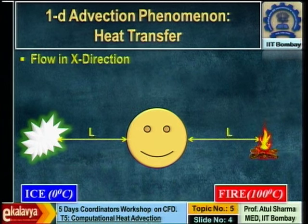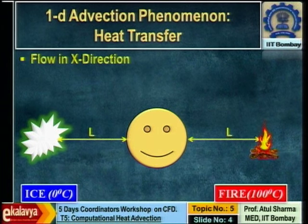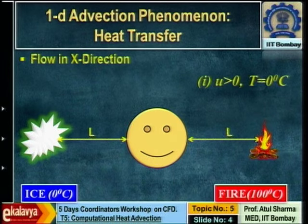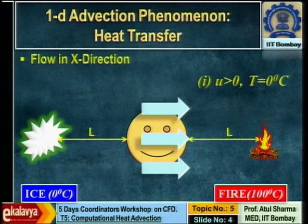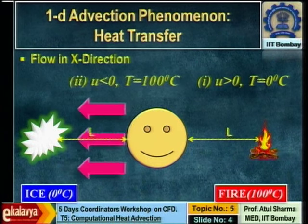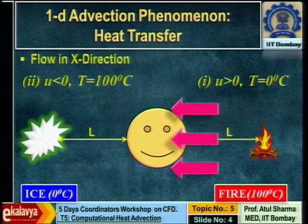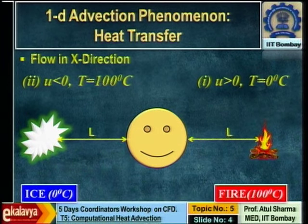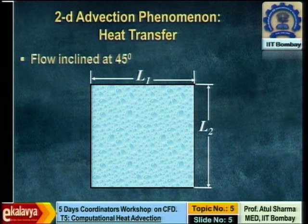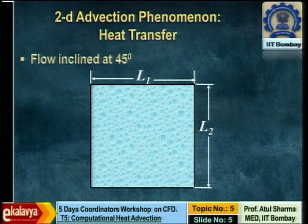Pure advection: if the flow velocities are very large, we can neglect conduction heat transfer as compared to advection heat transfer. So if the flow is of very large velocity from the ice side, you feel a temperature of 0 degrees centigrade; if the flow is very large from the fire side, you feel a temperature of 100 degrees centigrade. That is a one-dimensional assumption; let us go to the two-dimensional case.